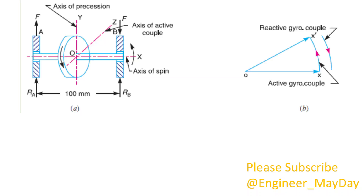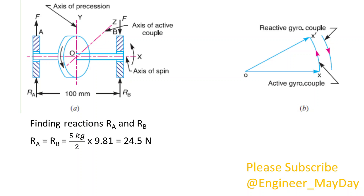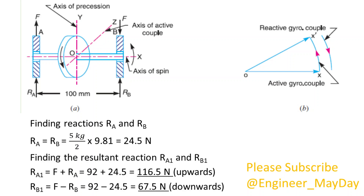Here is a diagrammatic view. Finding reactions RA and RB: RA equals RB equals 24.5 N. Finding the resultant reaction RA1 and RB1: RA1 equals 116.5 N upwards, RB1 equals 67.5 N downwards.